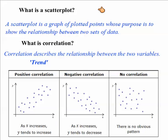Today we're going to review scatter plots and correlations. So what exactly is a scatter plot? A scatter plot is basically a graph of plotted points whose purpose is to show the relationship between two sets of data.